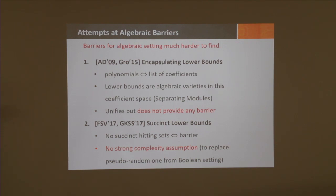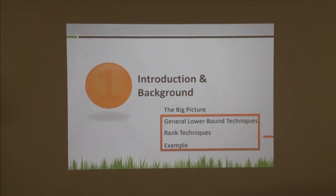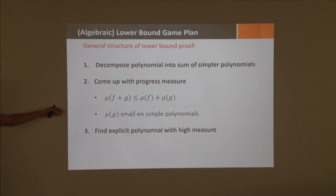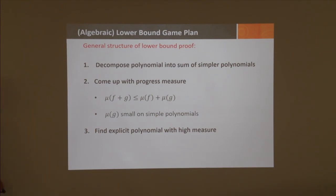Now let's talk about how we prove lower bounds in the arithmetic setting. I'll show general lower bound techniques—in particular the rank techniques—and give you an example of a lower bound. The general structure of a lower bound proof is: find a decomposition of your polynomial into a sum of very simple polynomials, then come up with some progress measure μ that is sub-additive. Then find some explicit polynomial that has high measure.